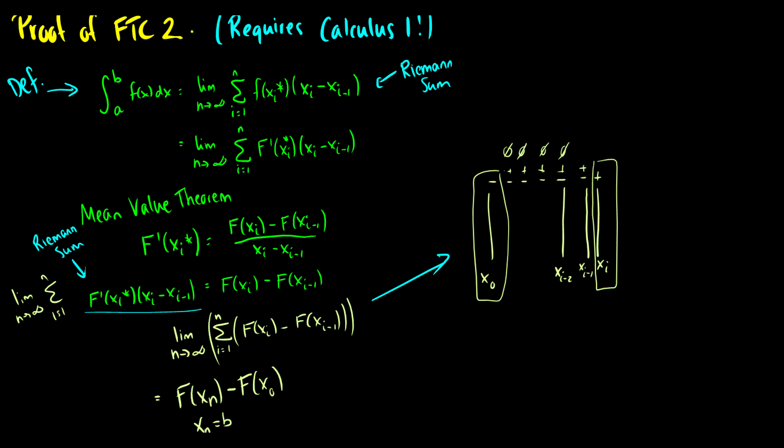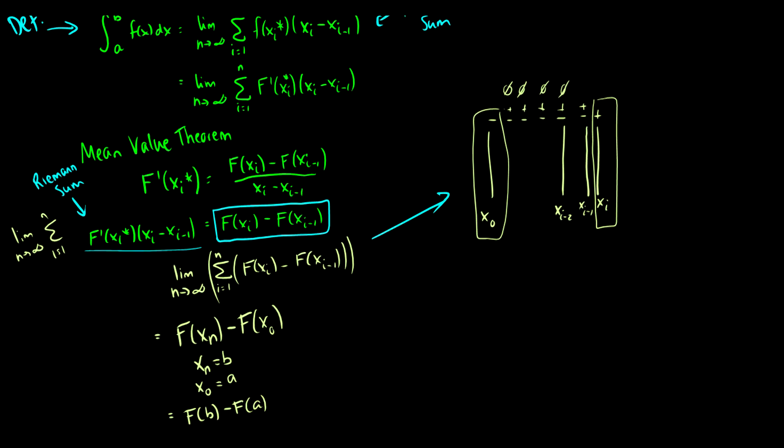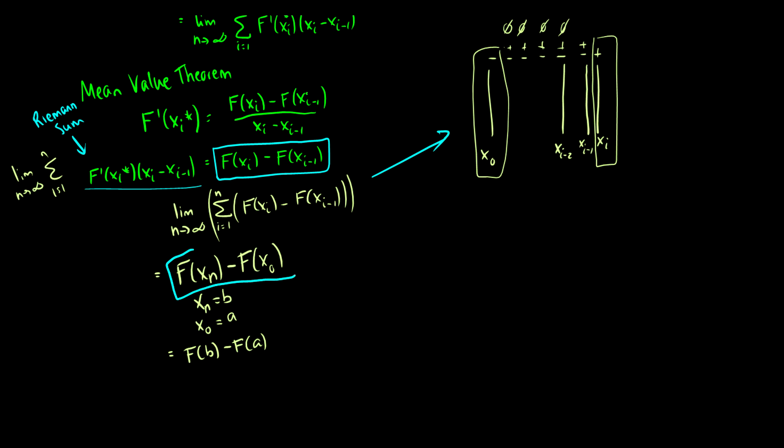We know that the Riemann sum is equal to the limit as n goes to infinity of the sum from one to n of this f of x_i minus f of x_i minus one. And using this picture, we expand all the terms and get left with this formula right here, which we know is just the final point minus the first point, which happens to be f of b minus f of a. Therefore, this formula is equivalent to the Riemann sum, which we know is equal to the definite integral from a to b.